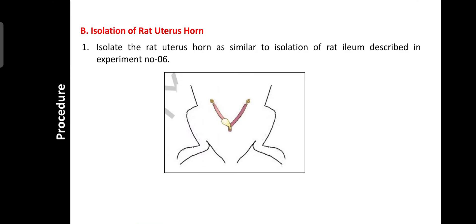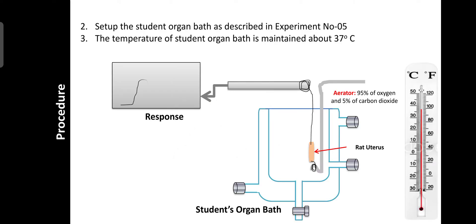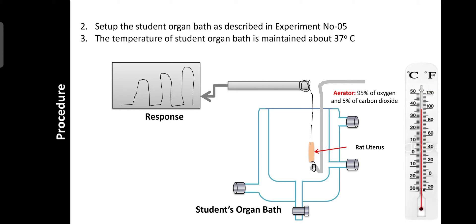For isolation of the rat uterus horn, the procedure is similar to isolation of rat ileum described in experiment number six. First, anesthetize the rat by dislocation of the spinal cord. Then cut open the abdominal cavity and expose the rat uterus horn as seen in the diagrams. The two horns can be cut separately for use in two practicals or to set up two assemblies. After setting up the organ bath as described in experiment number five, maintain the temperature at 37 degrees centigrade with the help of a heater and thermostat.